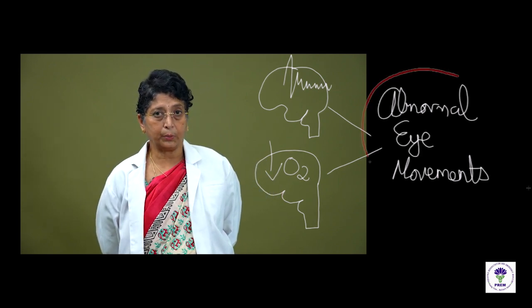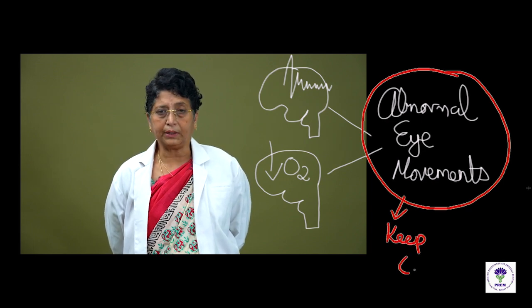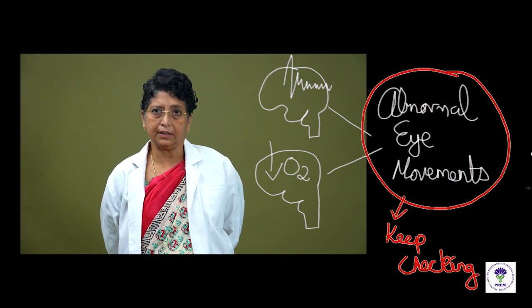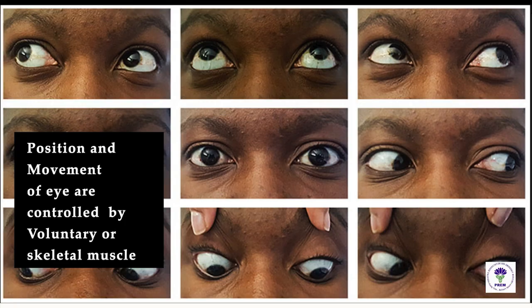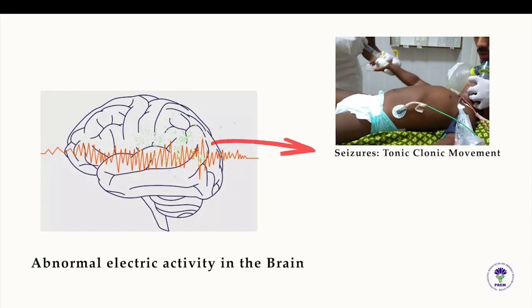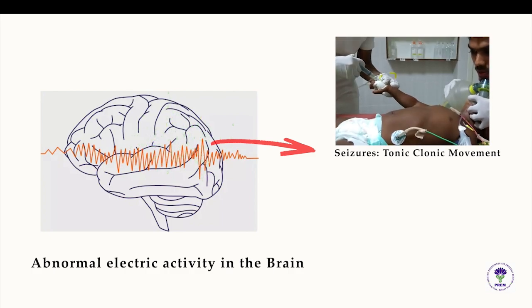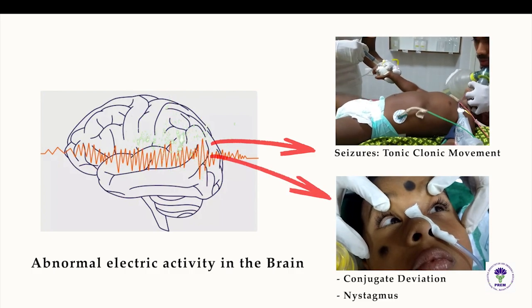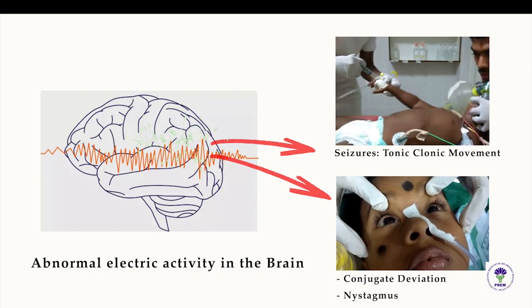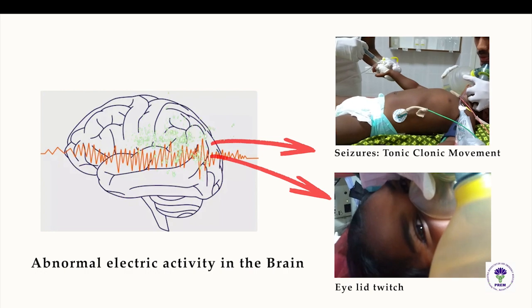It is important that we recognize every unresponsive child and look for eye signs. Look for eye position and movements and monitor them throughout resuscitation. The position and movement of eyes are controlled by voluntary or skeletal muscles. Abnormal electrical activity in the brain can cause seizures resulting in tonic-clonic movements of the limbs. Concurrently, the skeletal muscles responsible for eye movements can also convulse, resulting in conjugate deviation or nystagmus with or without eyelid twitch.